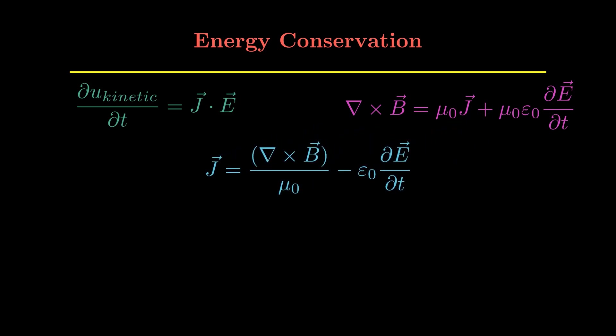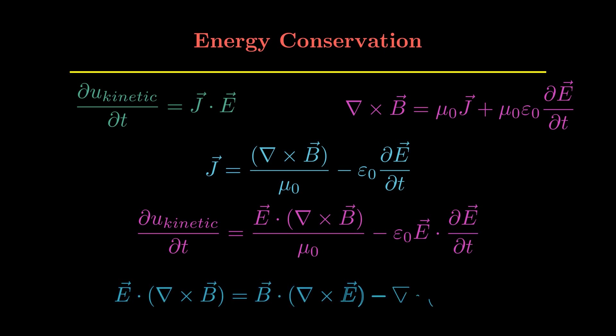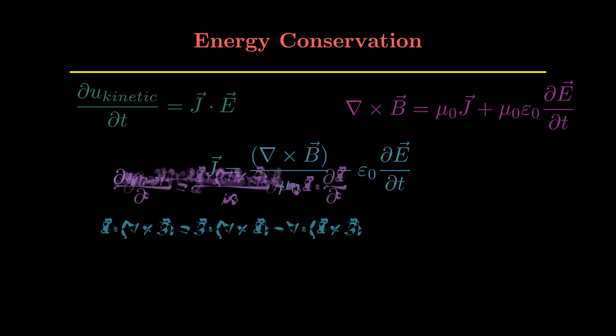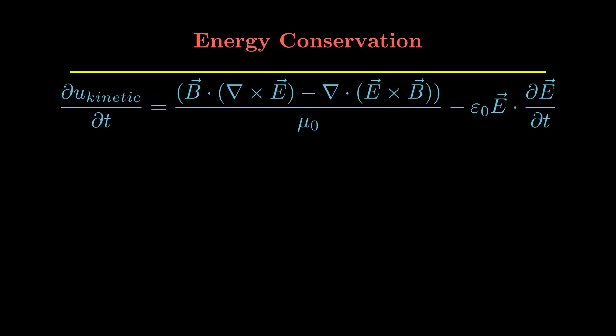Now substituting this in the first equation we get this, and then we will use a vector identity which is this big expression to help us. And then we will get ∂u_kinetic/∂t is equal to this.